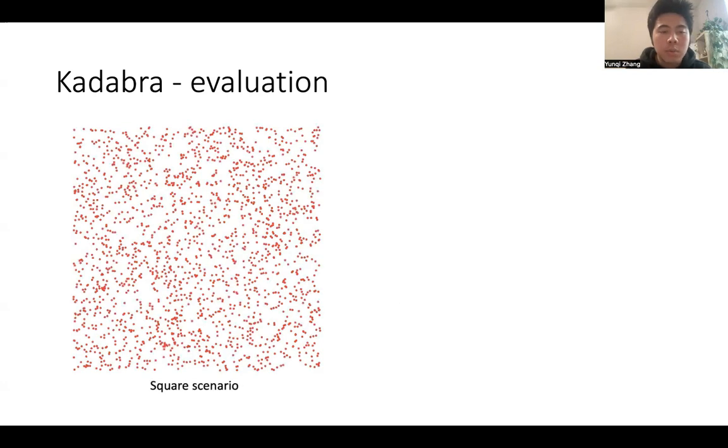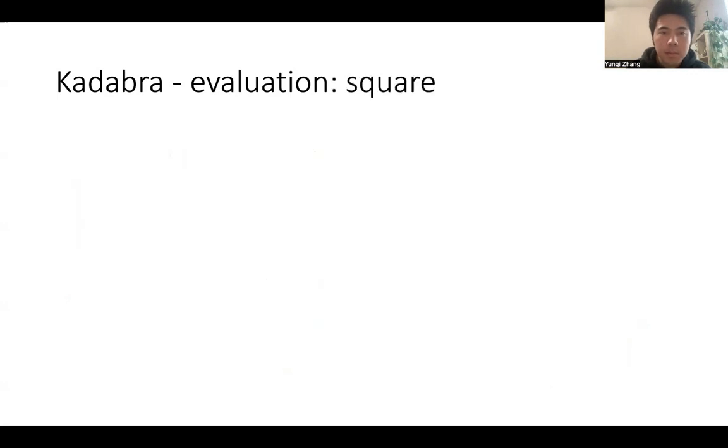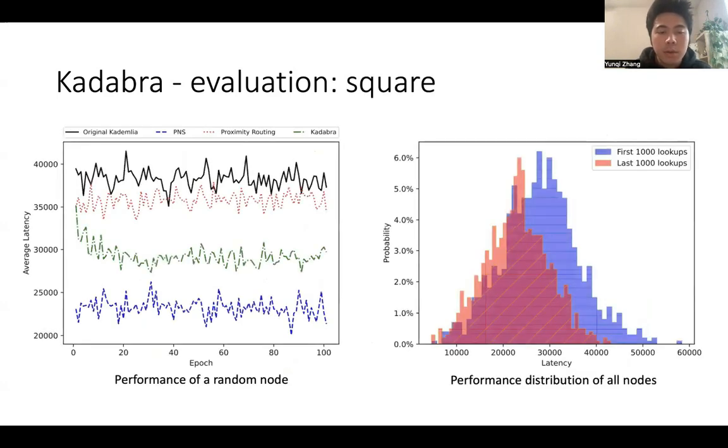In our evaluation, we have two scenarios. One is the square scenario, which is a toy. We have 2048 nodes distributed evenly in a square. We then have the real-world scenario. We have 2048 nodes distributed according to data from EtherScan.